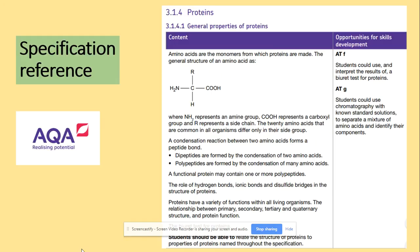Hi guys, welcome to proteins. In terms of the specification, you need to be able to draw an amino acid, which is a monomer from which proteins are made.